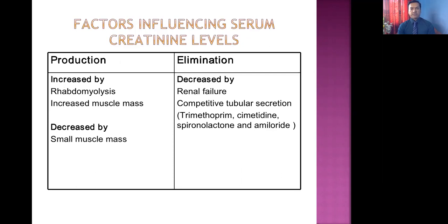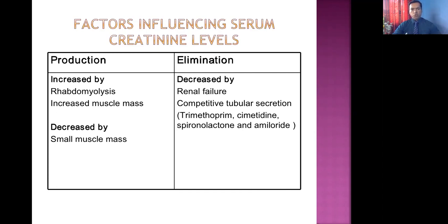These are the factors which influence serum creatinine level. Inside our muscle, there is a substance known as creatine. Creatine can be utilized by the muscle as a source of energy, and creatinine is one of the products of creatine metabolism — it is a waste product that must be excreted by the kidney. Production of creatinine is increased by breakdown of muscles, known as rhabdomyolysis.